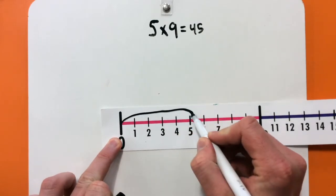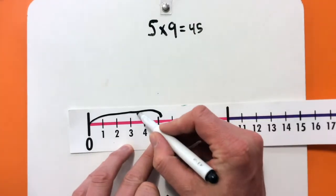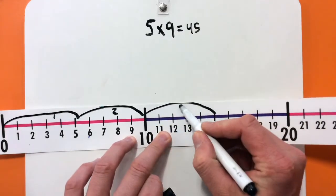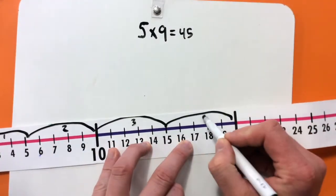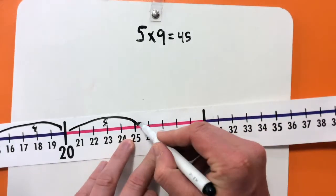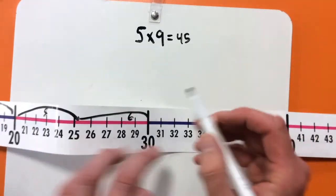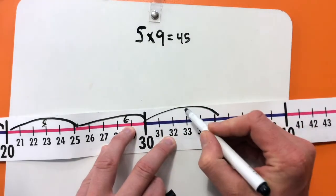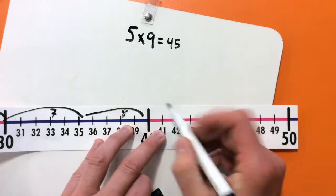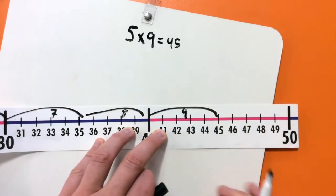I've got 5, which is 1, 10, which is 2, 15, 20, 25, 30, 35, 40, and 45.